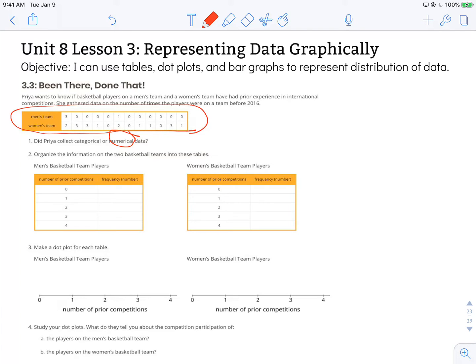Number two, organize the information on the two basketball teams into these tables. We're going to organize this data in a frequency table. Frequency is how many times do we encounter that particular value?